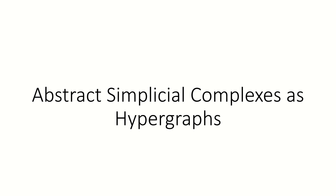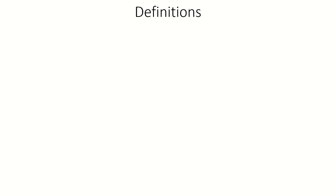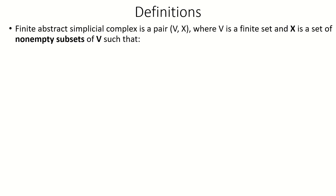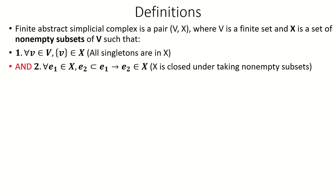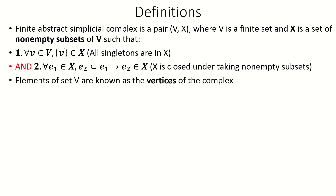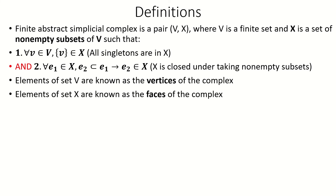Today we're going to introduce abstract simplicial complexes, which we'll view as a specific type of hypergraph later in the video. A finite abstract simplicial complex is a pair (V, X), where V is a finite set and X is a set of non-empty subsets of V satisfying two properties. The first property is that every singleton is in X — for every element in V, the set containing only that element is in X. The second property is that X is closed under the operation of taking subsets. The members of V are known as the vertices of the complex, and the members of X are known as the faces of the complex.